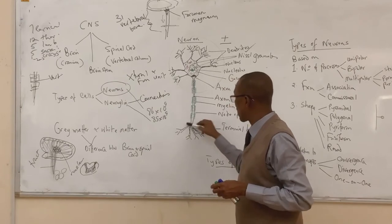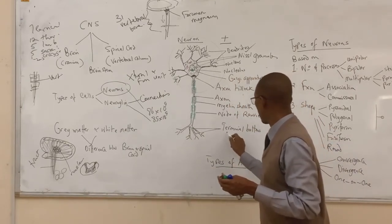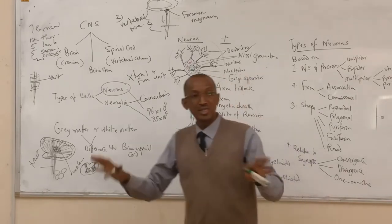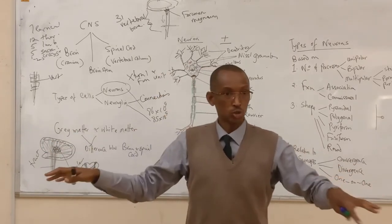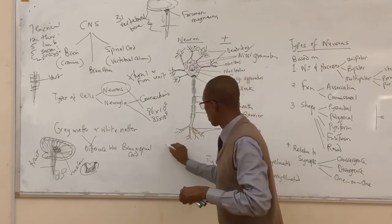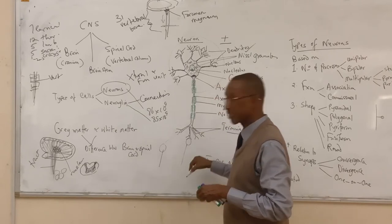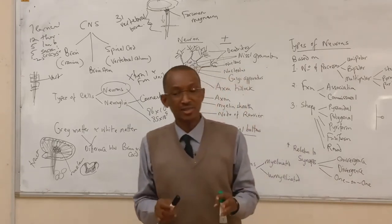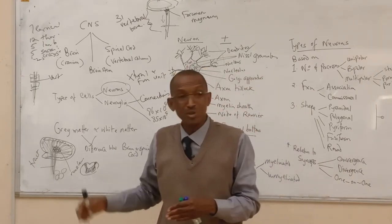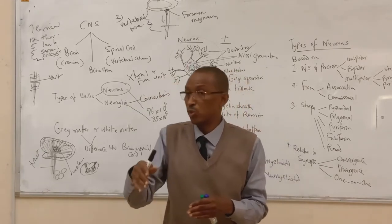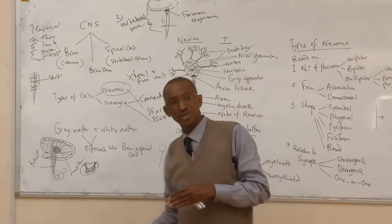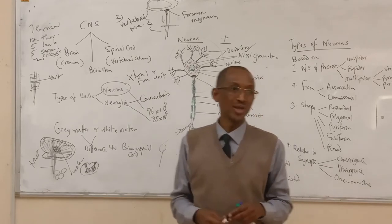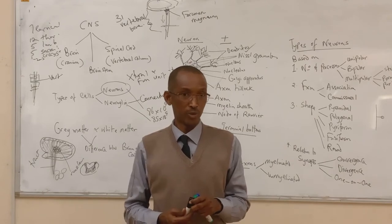The axon terminates at what we call terminal buttons — these serve as the limbs of the neuron. It is these terminal buttons that attach to other neurons to form a synapse, so that information generated in one neuron is transmitted to the next. The junction between the terminal buttons of one neuron and the cell body or dendrites of another neuron is called a synaptic junction or synapse.